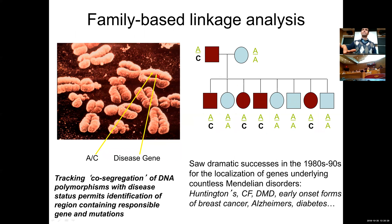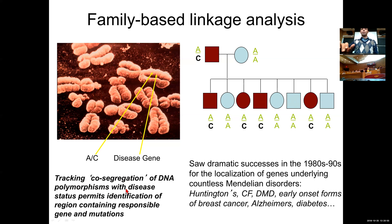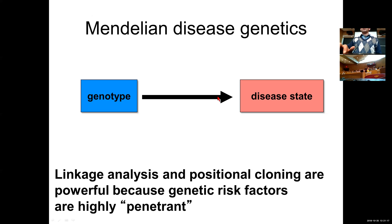By tracking the co-segregation of DNA polymorphisms with disease status, you can identify the regions responsible for both the genes and the causative mutations. This led to huge success in the 1980s and 1990s, and many, many genes were localized that were previously huge problems. The concept of Mendelian disease genetics was that inheriting the genotype almost guaranteed inheriting the disease state — linkage analysis and positional cloning were very powerful because the genetic risk factors were highly penetrant.